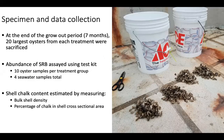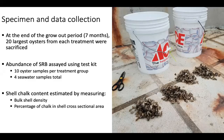At the end of the growout period, I sacrificed the 20 largest oysters from each treatment group. I tested sulfate reducer abundance using a test kit, applying it to 10 oyster samples from each group and four seawater samples collected on the day I sacrificed the oysters. Shell chalk content was measured two ways: measuring bulk shell density and measuring the percentage of chalk as seen in the cross-sectional area of one valve.